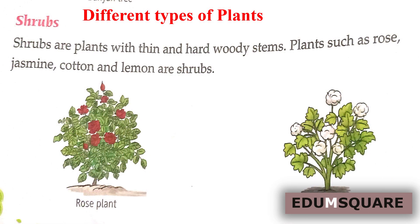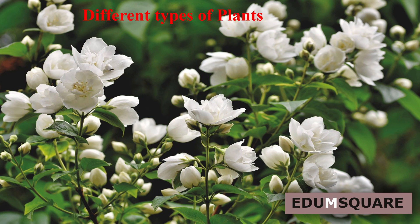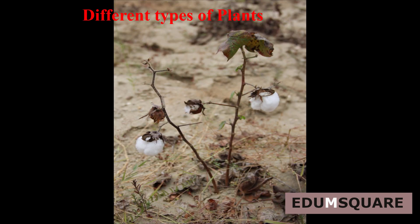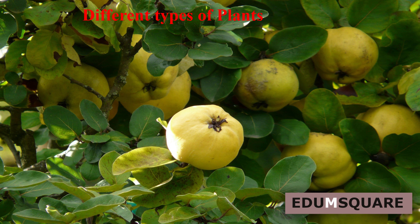The second type is shrubs. Shrubs are plants with thin and hard woody stems. Plants such as rose, jasmine, cotton, and lemon are shrubs. Small plants with many branches are called shrubs, like our rose, jasmine, hibiscus, cotton, and lemon.